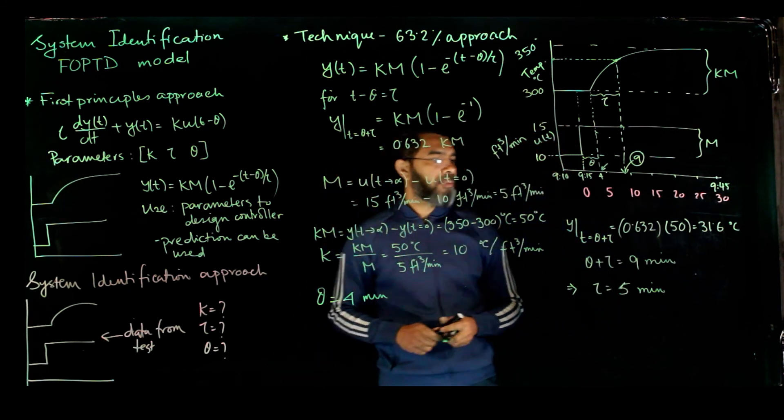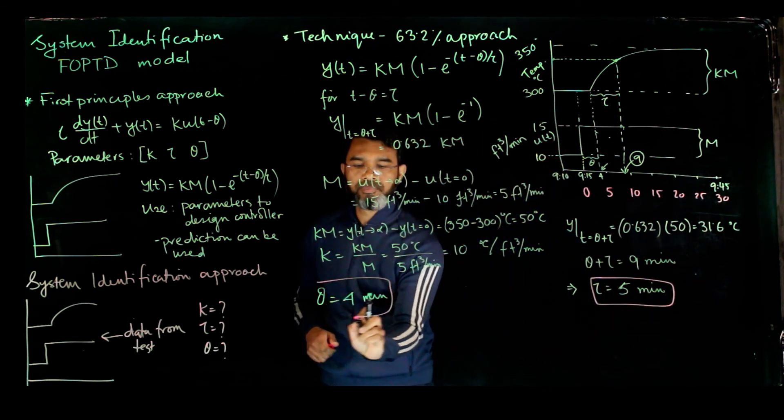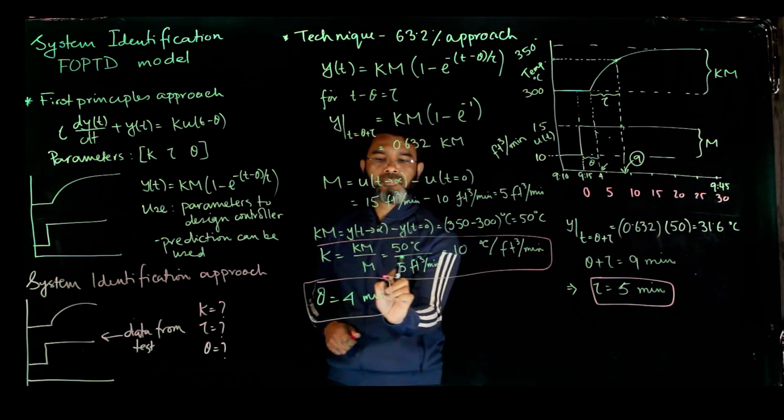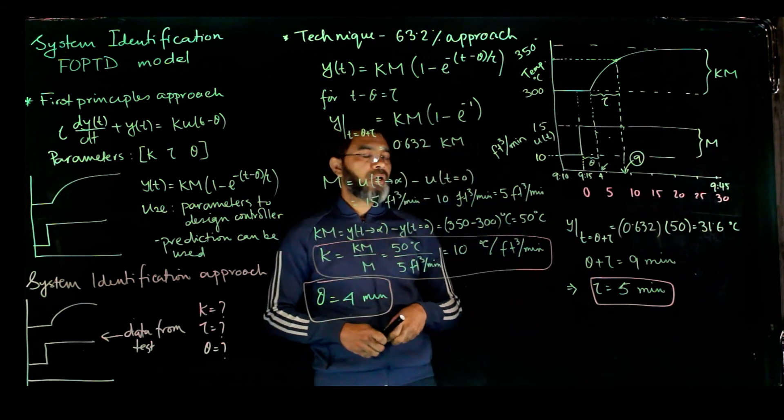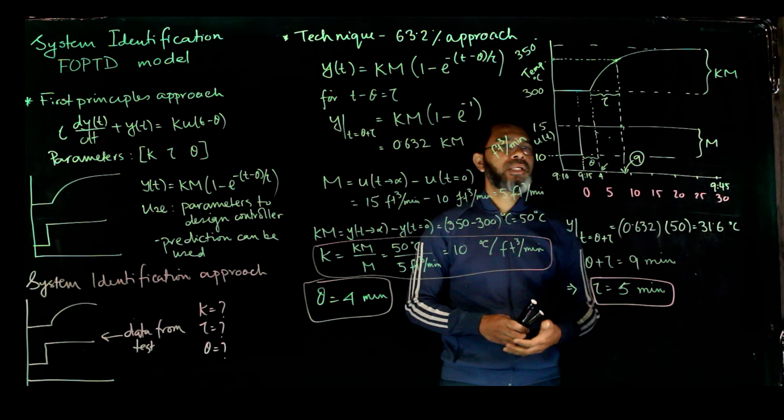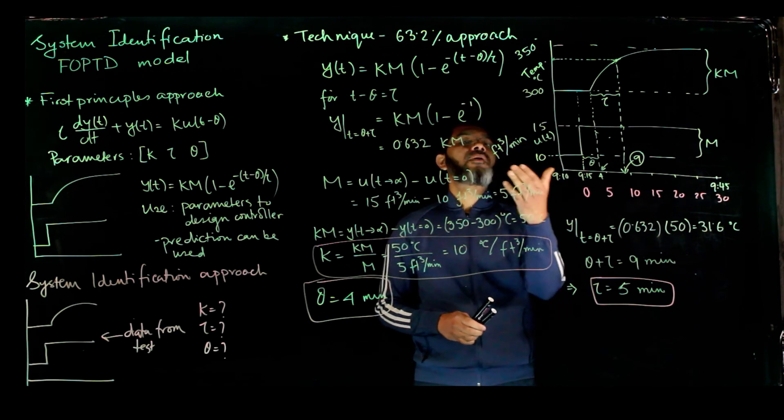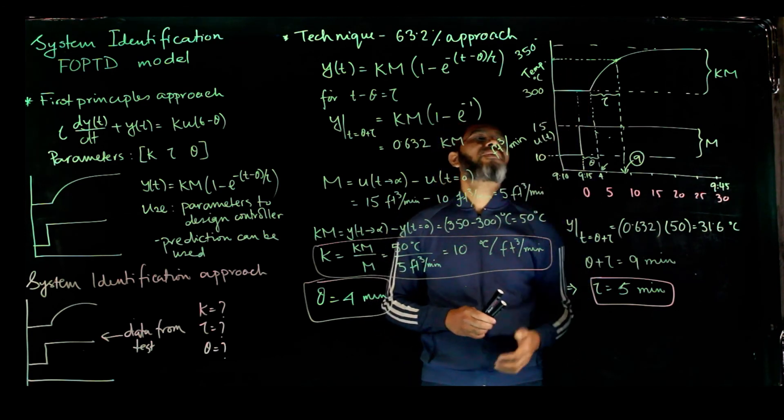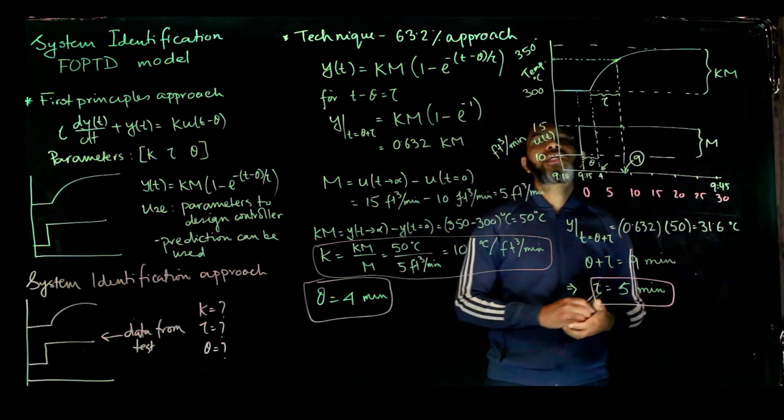We have got these three parameters: tau, theta, and K. Now we can use these three parameters to design a controller or we can use these parameters to further predict the output for a given input. Suppose now if the input changed from 10 to 15, we had a value from 300 to 350, that is the experimental data. Now we have to figure out if it goes from suppose 15 to 20, what will be the temperature.